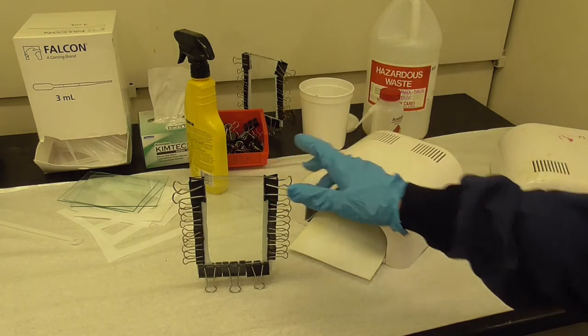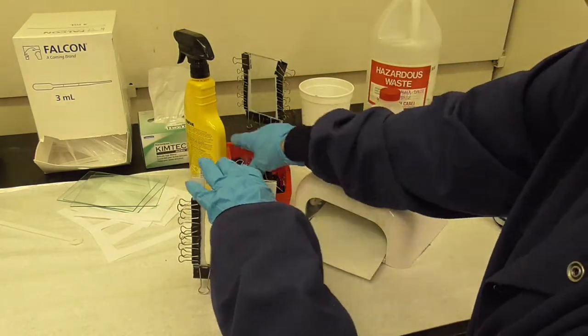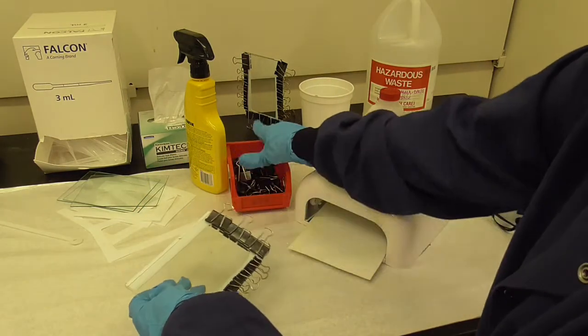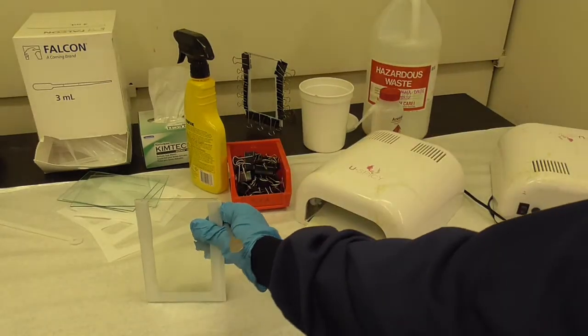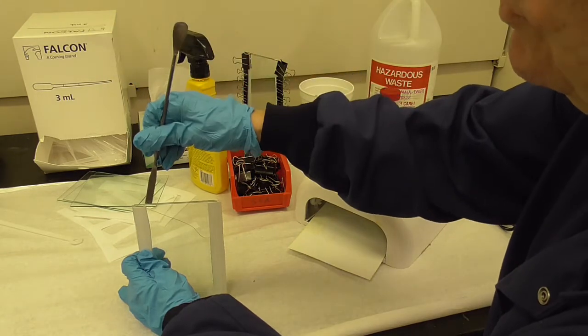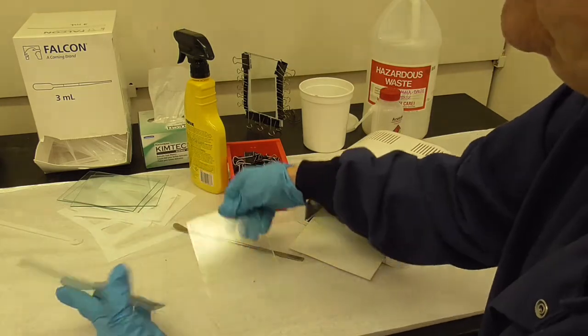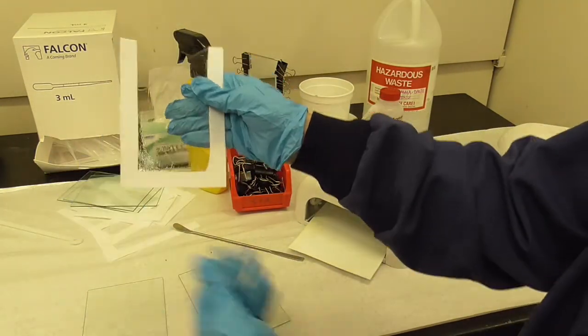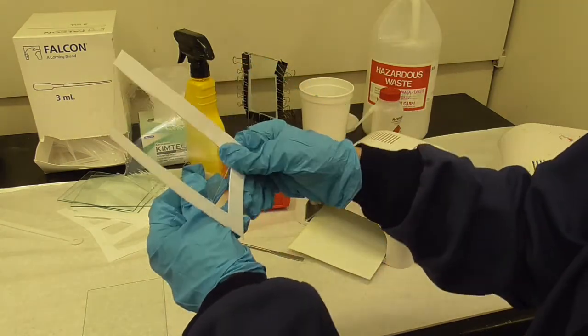I can go ahead and take the clips off. If the glass is stuck together you can take the end of your spatula and kind of twist it and that will make it come apart. Then we can peel the film off along with the spacer.